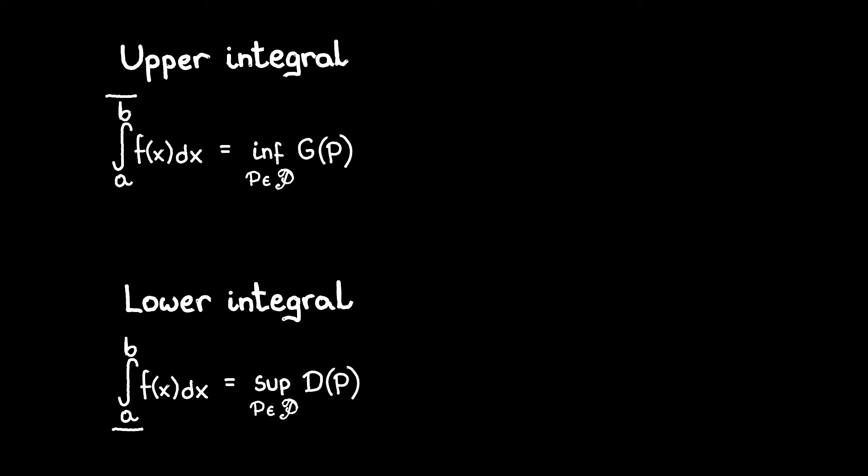Take the infimum of the upper sum and the supremum of the lower sum. Both of these we are taking over all possible partitions. The first one is what we call the upper integral. The second one is the lower integral. The definition might seem complicated at first. The intuition behind it is as follows.